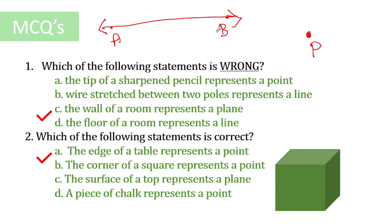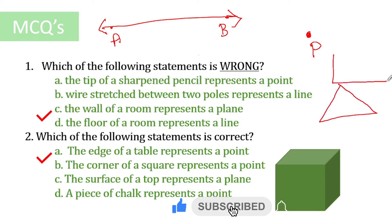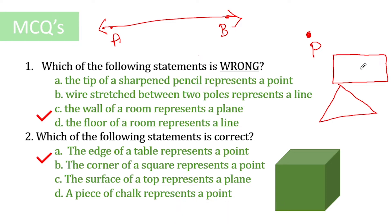The next statement: the wall of a room represents a plane. A plane is a flat 2D surface — like a triangle, rectangle, or square. If you look at a wall, it is indeed a plane, so that statement is correct. The final statement says a floor of a room represents a line — but that's wrong; a floor represents a plane too. So the incorrect statement is option D, and that is the right answer.